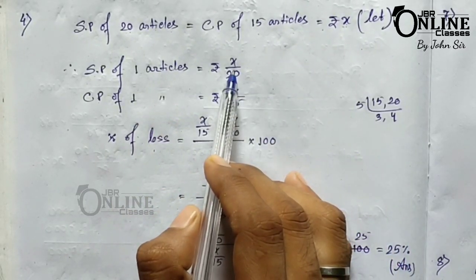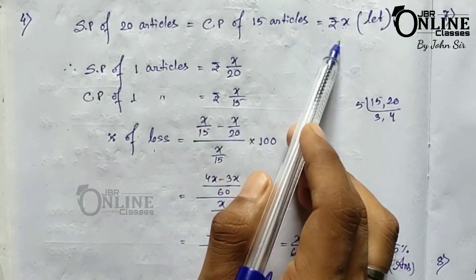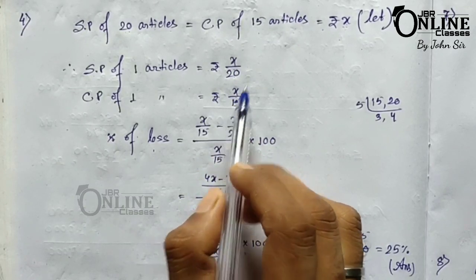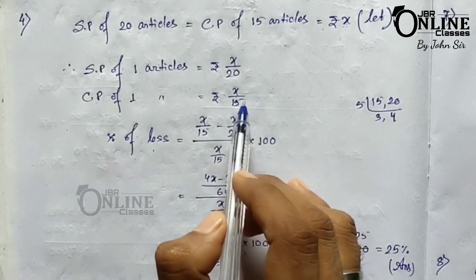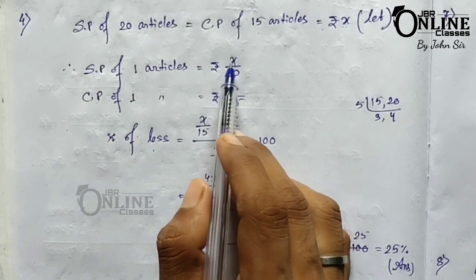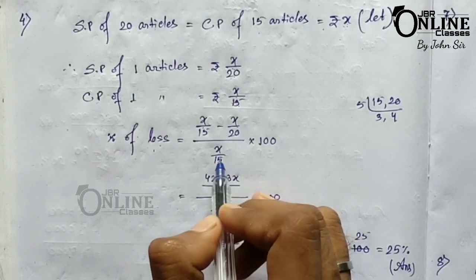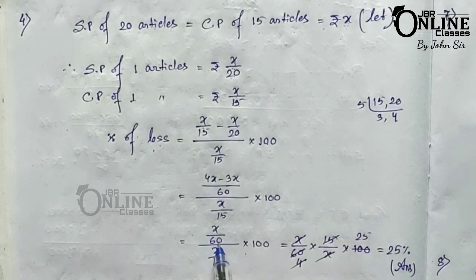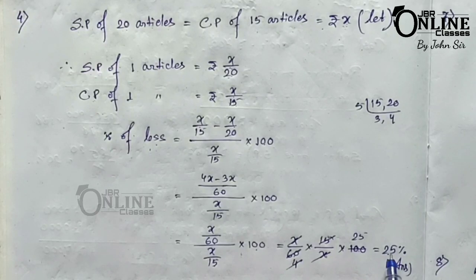Comparing x/15 and x/20: since x/15 is the larger fraction, CP is greater than SP, confirming a loss. Using the formula (CP minus SP) divided by CP into 100, with LCM of 15 and 20 being 60: the calculation gives (x/60) divided by (x/15), into 100, which equals 25%. The loss percentage for problem four is 25%.